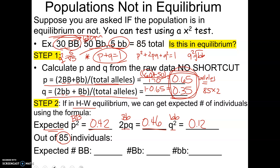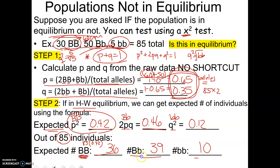We're going to use a chi-square test — we've used it for genetics and null hypotheses. A chi-square test lets us compare our observed data to our expected data, to see if observed is close enough to expected. So: 85 times 0.42 gives 35.7, which I'll round to 36 for big B big B; 85 times 0.46 rounds to 39 for heterozygous; and 85 times 0.12 rounds to 10 for homozygous recessive. These are our expected counts if the population is in Hardy-Weinberg equilibrium.